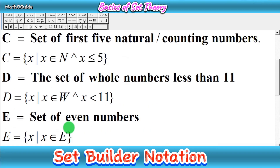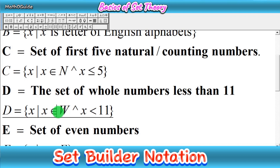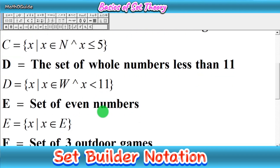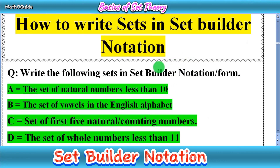This is a very easy method to write sets in set builder form. Whenever you have limits or a range, write three parts: the variable, then the type of set the variable belongs to, then 'and' followed by the limits. If you have no limits, simply write X such that X belongs to the name of the set. I hope you got the basic idea of how to write sets in set builder notation. Thanks for watching, and don't forget to subscribe to my channel.